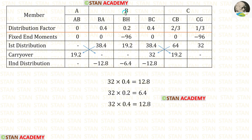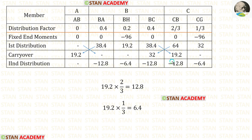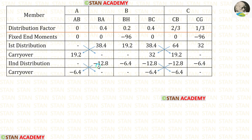Now let us do the second distribution at joint B by multiplying the carry-over value with the distribution factors. We get positive values, so we enter them as negative inside the table. Now let us do the second distribution at joint C by multiplying this value with the distribution factors. We get positive values, so we enter them as positive. Now let us do the carry-over by dividing these values by 2 and entering the answers.